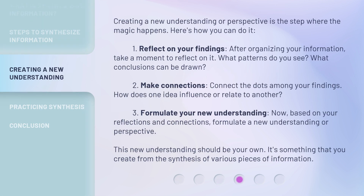Creating a new understanding or perspective is the step where the magic happens. Here's how you can do it. Step 1: Reflect on your findings. After organizing your information, take a moment to reflect on it. What patterns do you see? What conclusions can be drawn? Step 2: Make connections — connect the dots among your findings. How does one idea influence or relate to another?